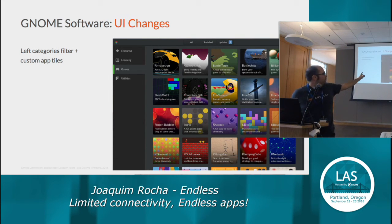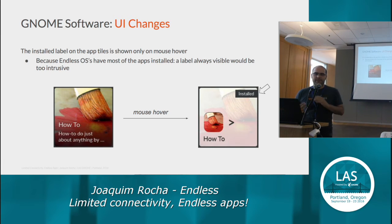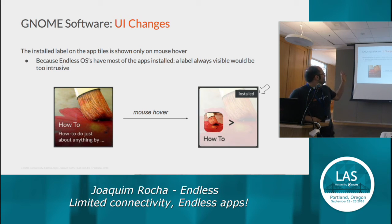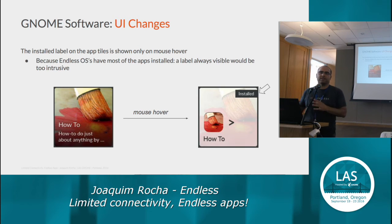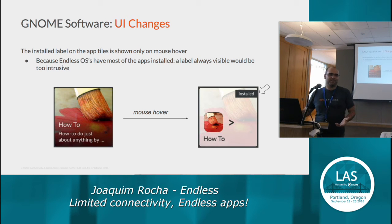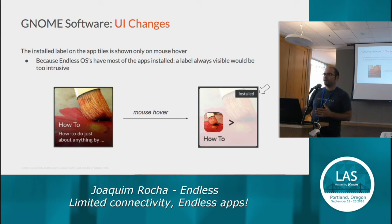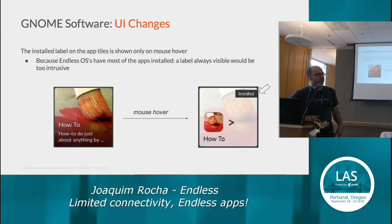When you use your mouse and hover over one of those tiles, an effect comes up showing the application icon and the app name. We don't show immediately on the tile that an application is installed — only when you hover. When you ship images preloaded with a lot of content and most applications are installed, it makes no sense to show 'install, install, install' when maybe only 10 apps are not installed. The default is for things to be installed, and that's why we make that change in the UI.